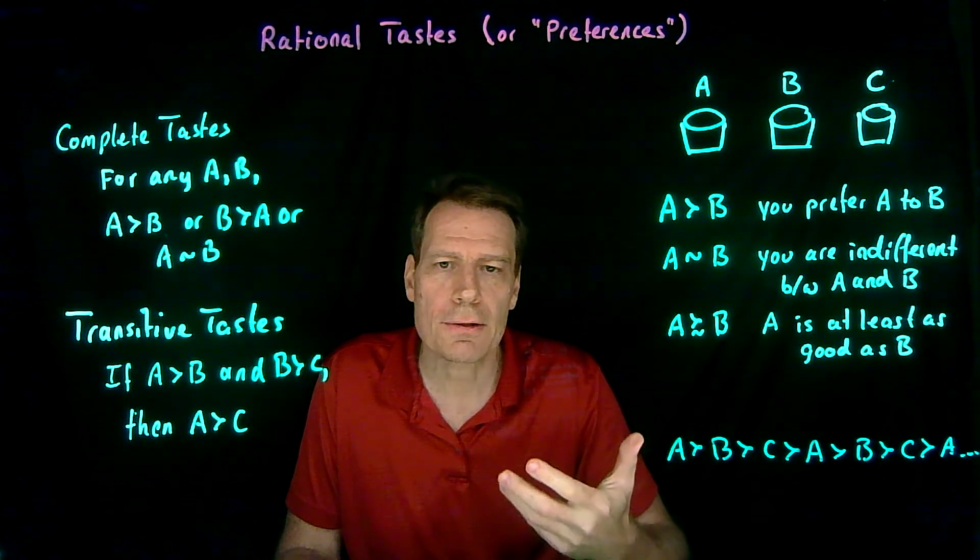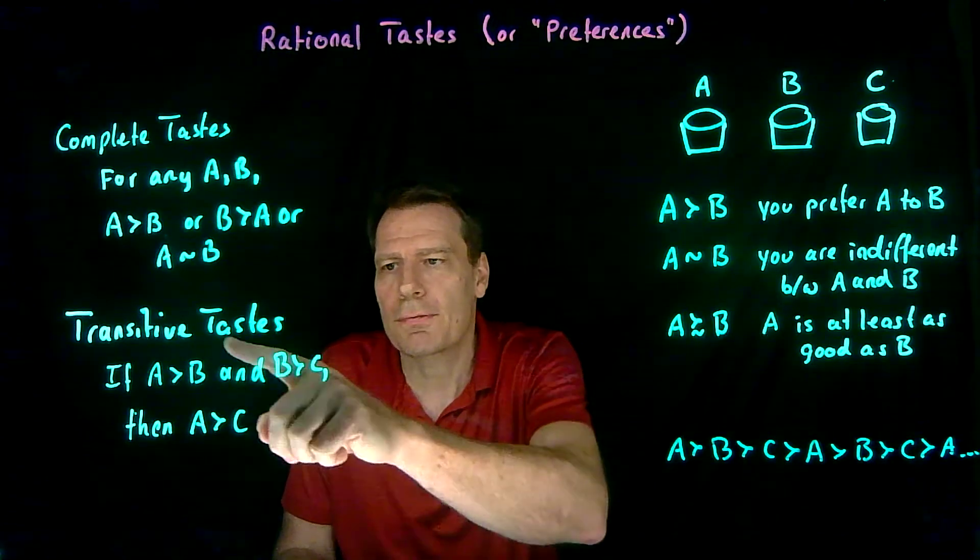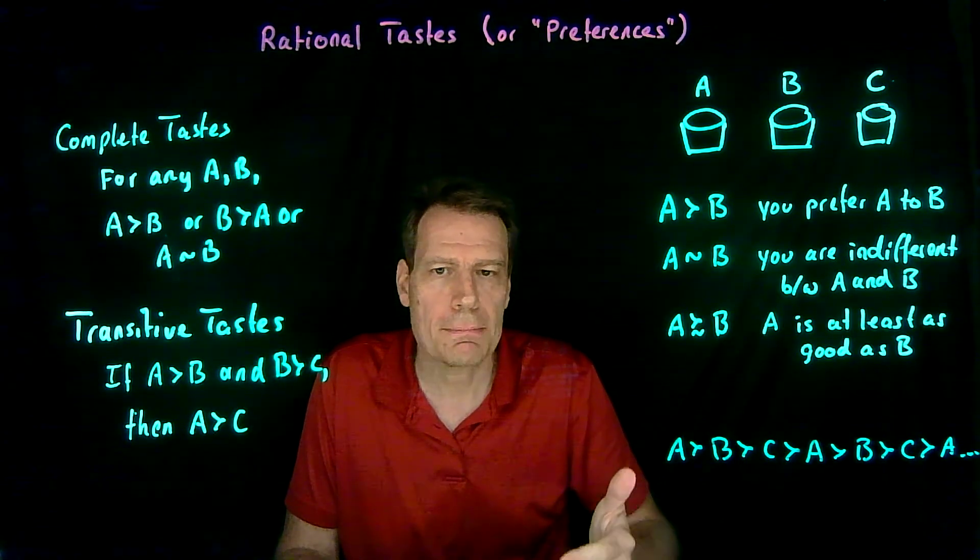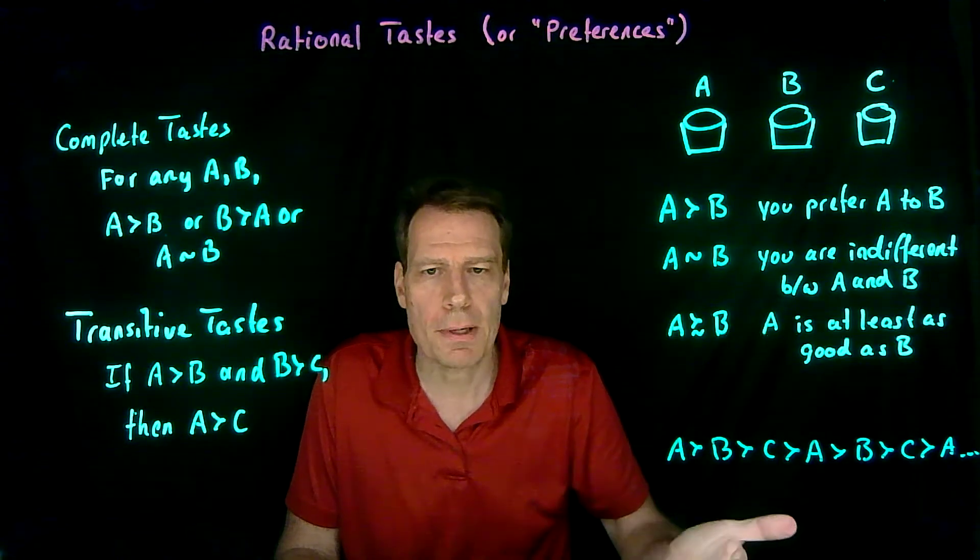In order for you to be able to settle on the final choice, you have to have transitive tastes. If A is better than B and B is better than C, then A should be better than C.